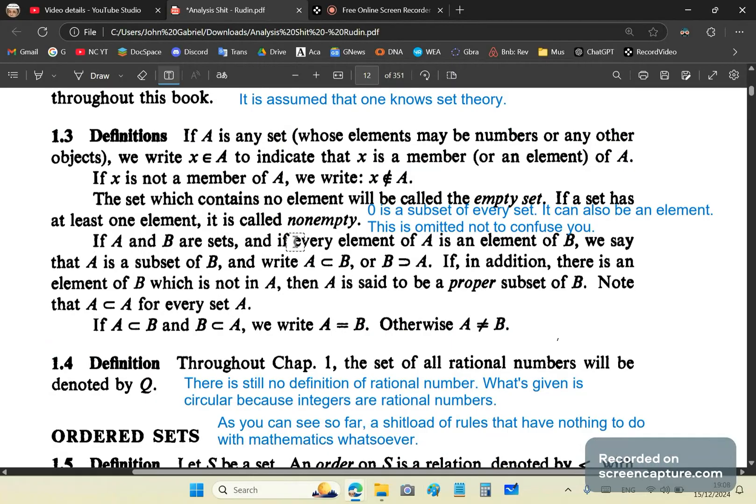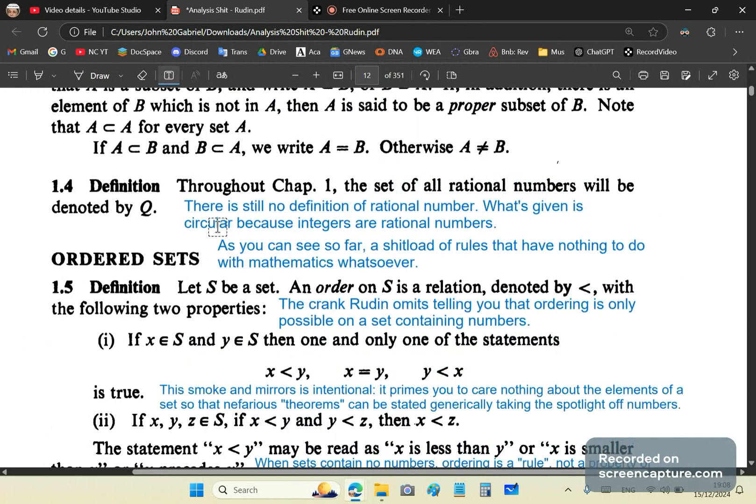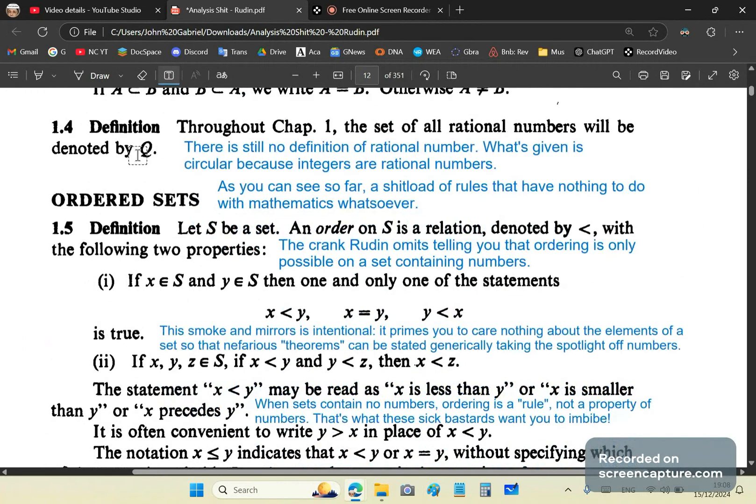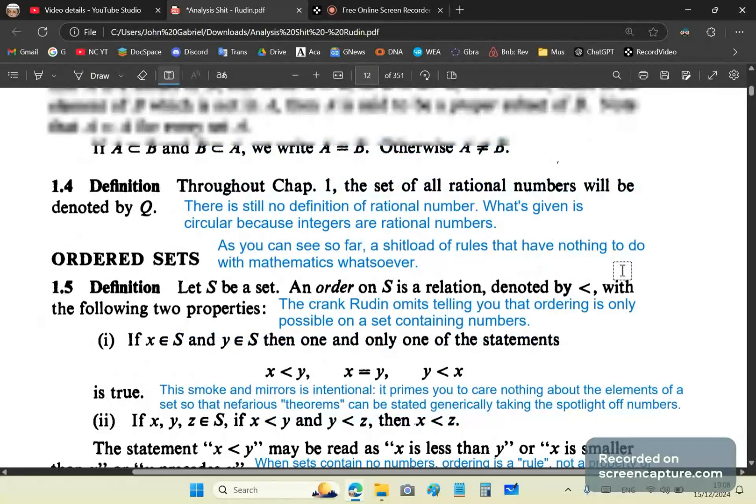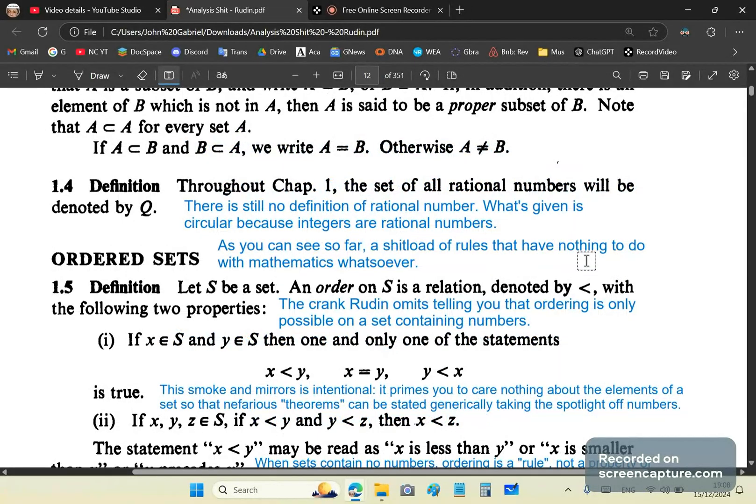But what he doesn't mention here when he's going through the definitions is that zero is a subset of every set, but it can also be an element. And of course, he doesn't include this here because it's omitted so as not to confuse you. And of course, he says throughout chapter one, the set of all rational numbers will be denoted by Q. Well, there's a saying in Greek which is actually sarcastic, and it means you've blessed us. In other words, you've told us absolute shit. Don't give a damn. You can denote it by anything you like. We still don't know what rational numbers are. We don't even know what set is. It hasn't been defined.